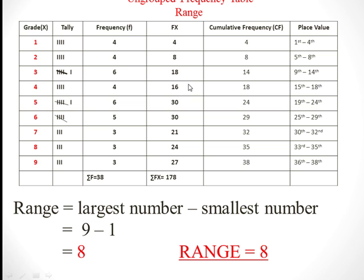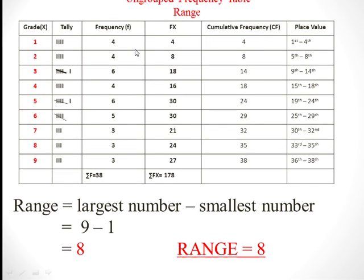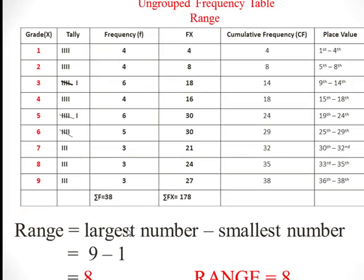The range is very easy: it is the largest value minus the smallest value. The largest is 9 and the smallest is 1, so the range is 9 minus 1, which equals 8.